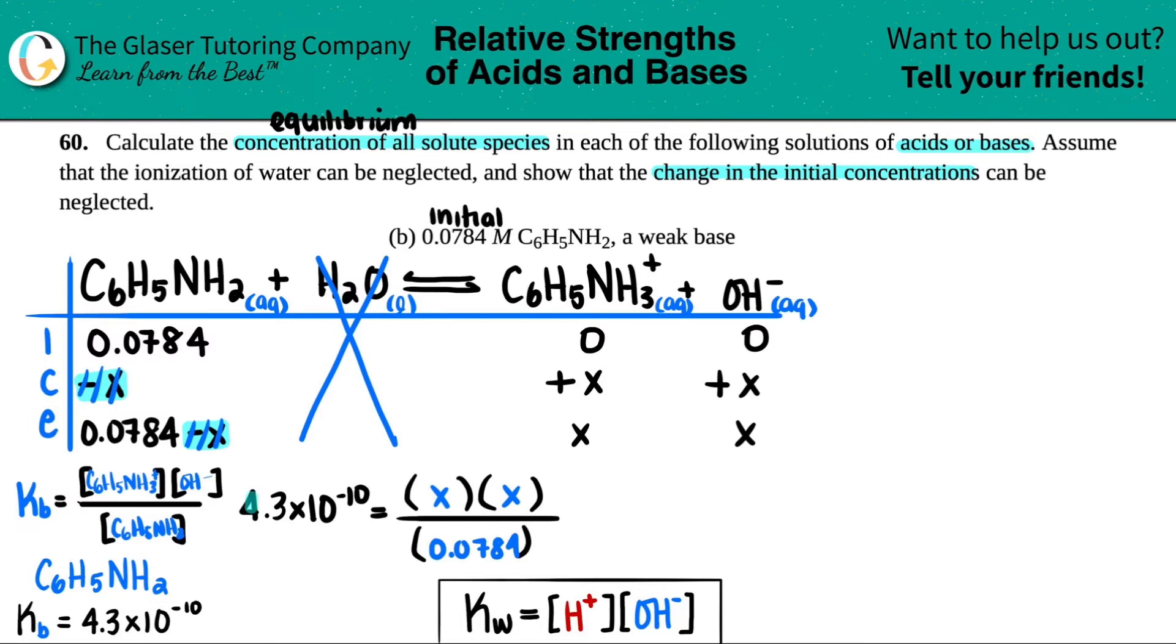We can do cross multiplication to solve for x, right? And x times x is just x squared. So x squared equals 4.3 times 10 to the negative 10th times 0.0784. And since this is not the full answer, we do not round. So 3.3712 times 10 to the negative 11th. And maybe I'll just pull this up because we want to get x by itself. So we do the square root on both sides. And now that's going to be the answer. And they give me three sig figs, so I'll give three sig figs back.